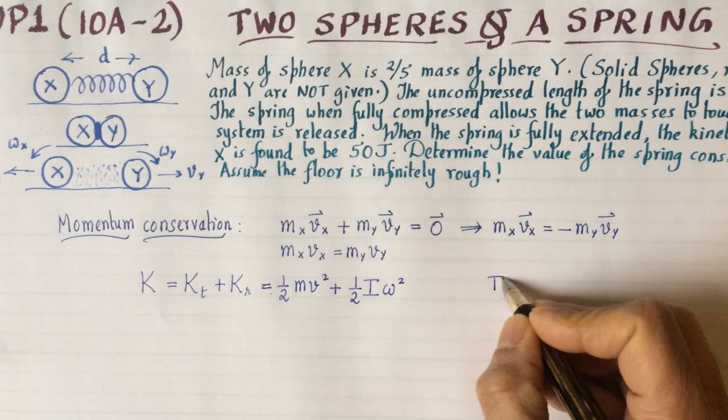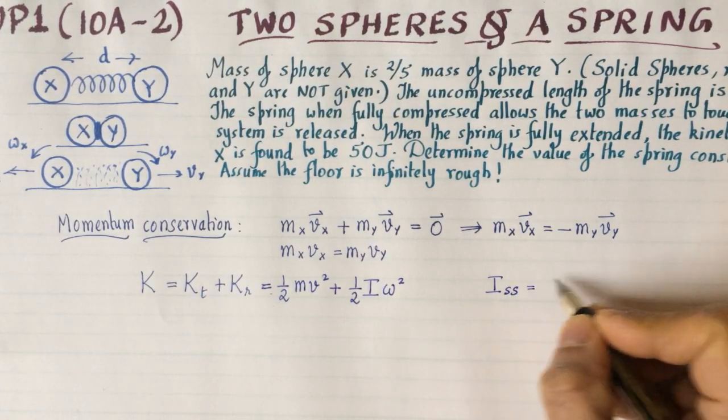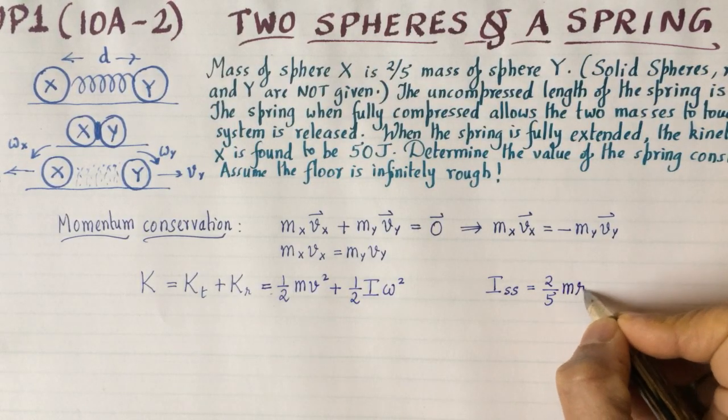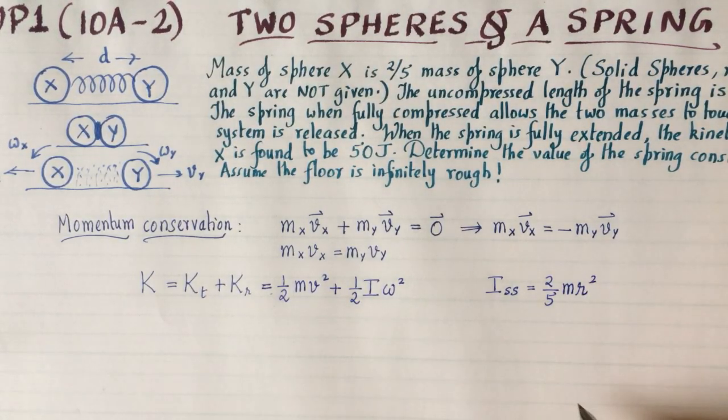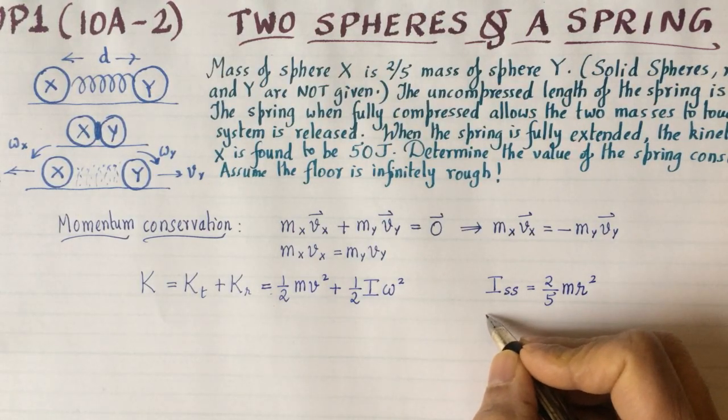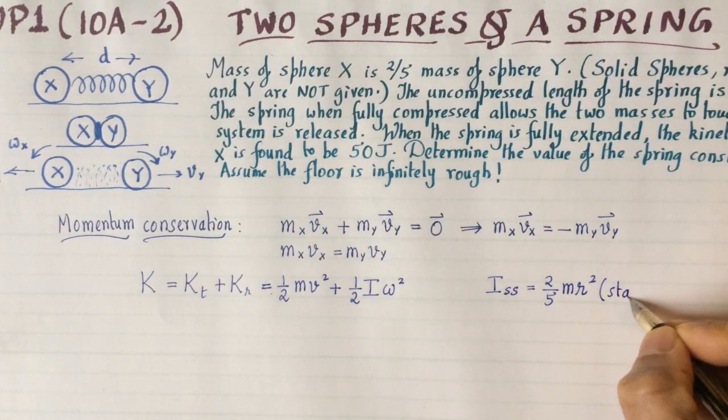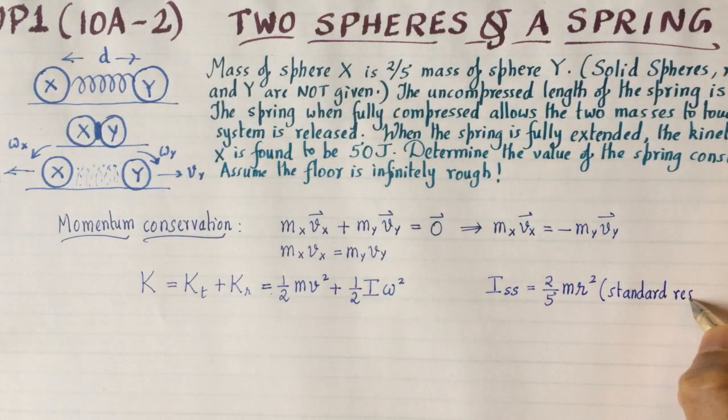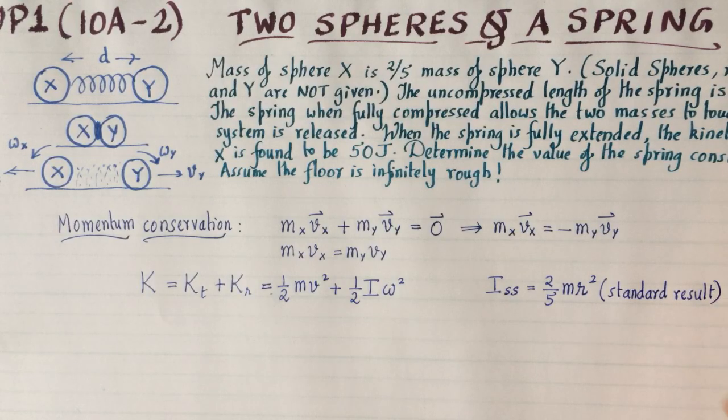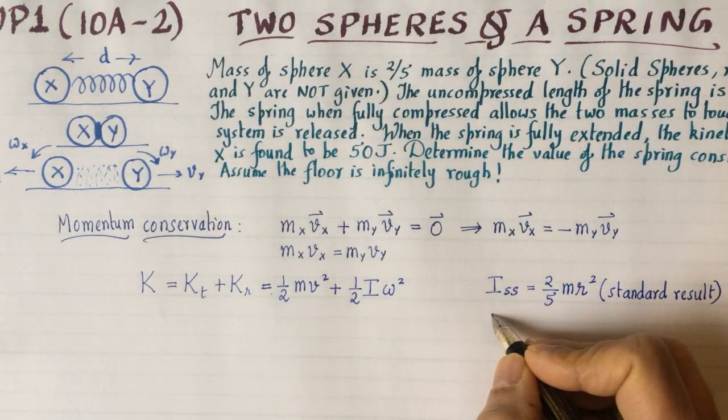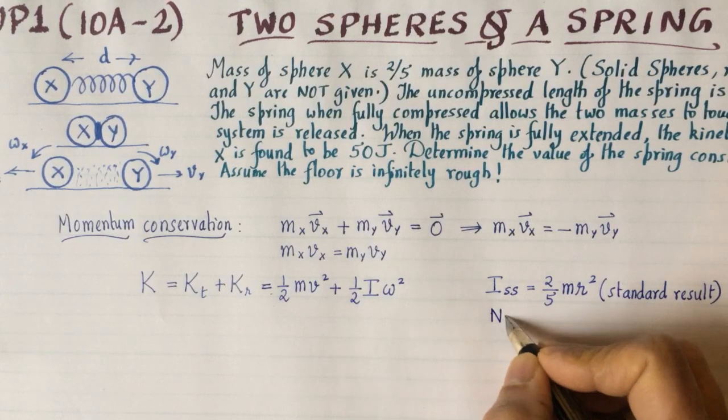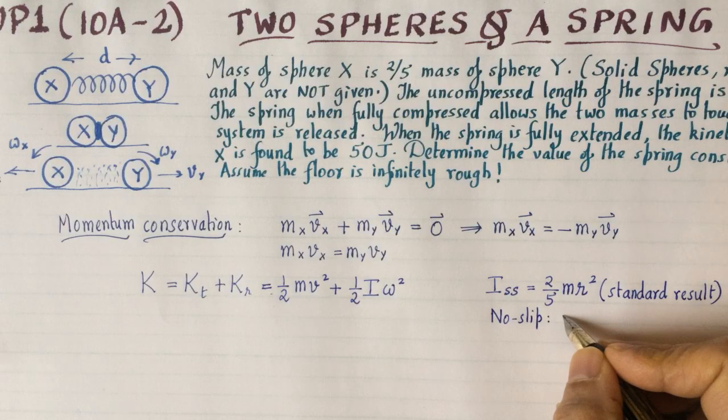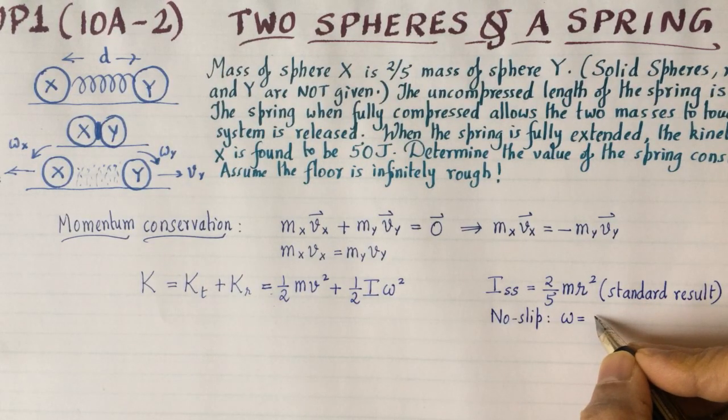If there's no slip, the no-slip condition has to be used to determine the relationship between v and ω. That tells me that ω = v/r. Observe it makes dimensional sense because ω is measured in radians per second, v is in meters per second, and r is in meters. So when you divide them, you get one over seconds, which is the same as radians per second. If you forget the no-slip condition, this is one way to recover it based just on units.